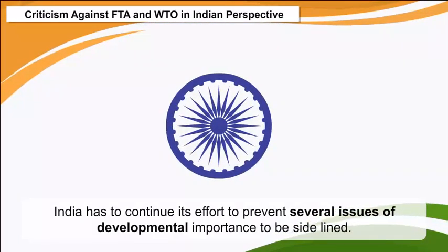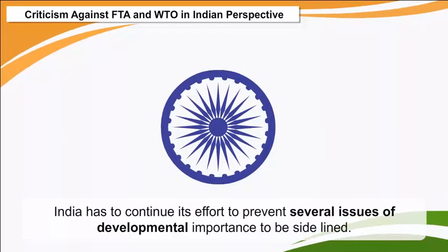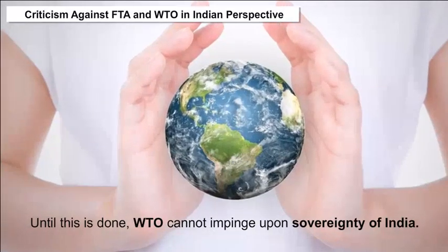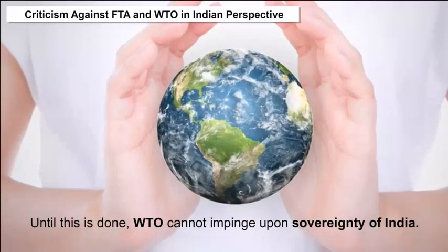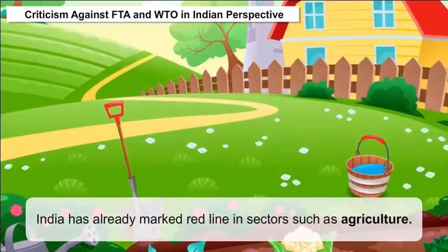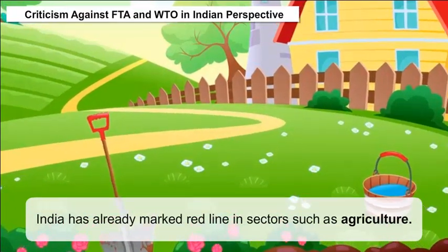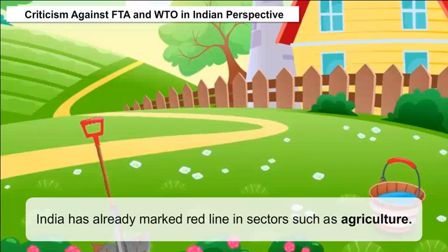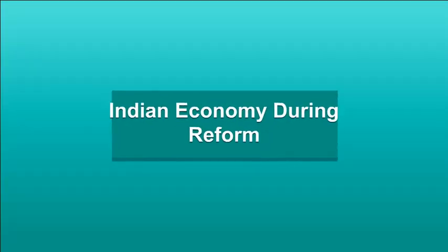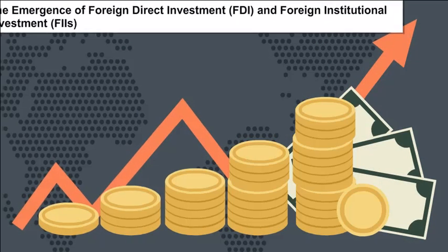Criticism against FTAs and WTO in the Indian perspective: India has to continue its efforts to prevent issues of developmental importance from being sidelined. Until this is done, the WTO cannot impinge upon the sovereignty of India. India has already marked a red line in sectors such as agriculture, making it clear that there is no scope for compromise on its positions.